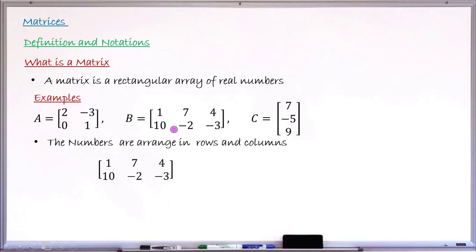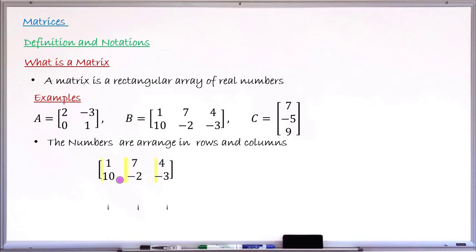Numbers in each matrix are arranged in rows and columns. Rows are the horizontal lines — the first line is called the first row, the second line is the second row. Columns are the vertical lines. In matrix B, you have 1 and 10 as elements in the first column, 7 and minus 2 in the second column, and 4 and minus 3 in the third column. So there are three columns and two rows.